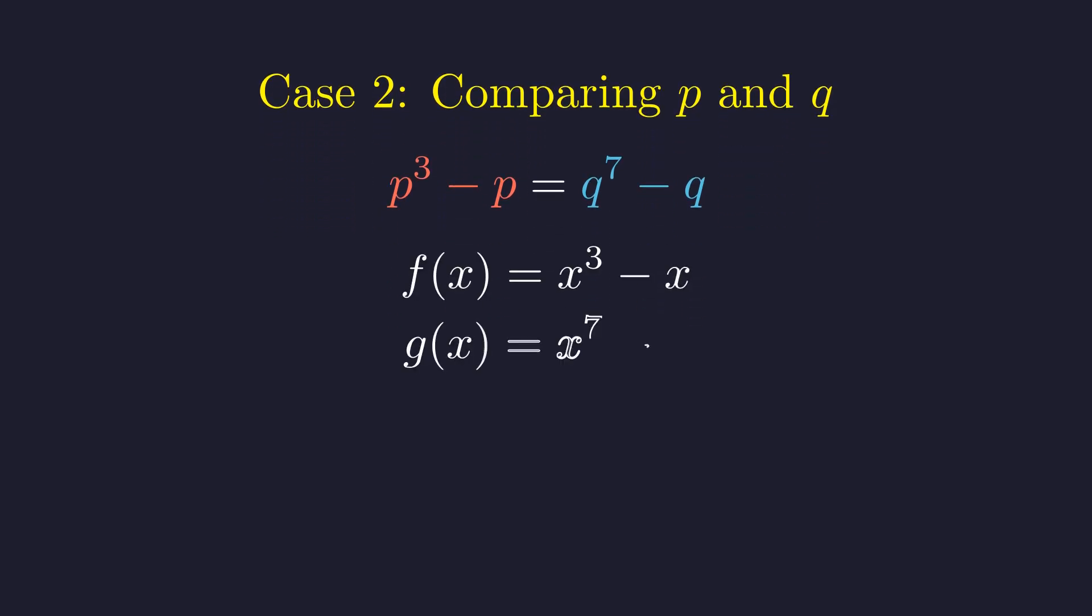Let f of x equal x cubed minus x. Its derivative, f prime of x, is 3x squared minus 1, which is positive for x greater than or equal to 1. Thus, f of x is strictly increasing for all primes.